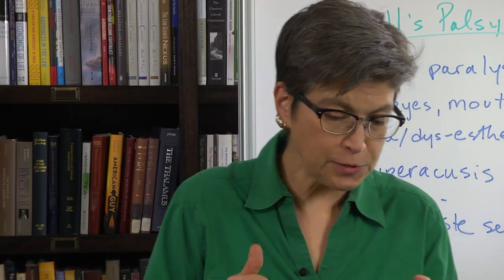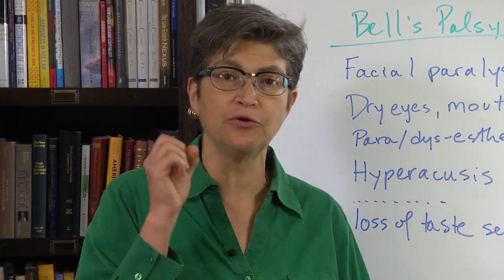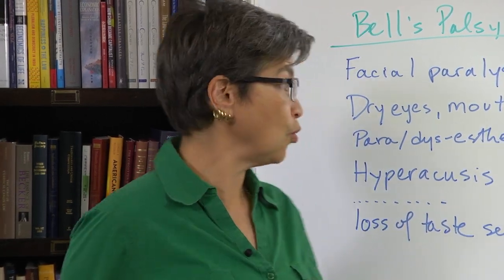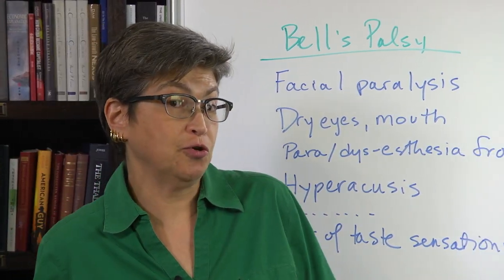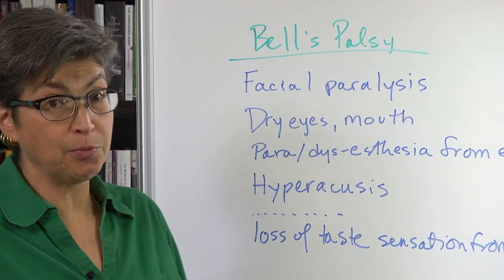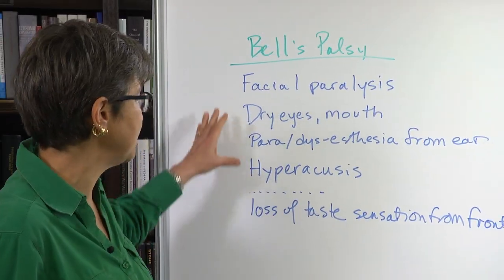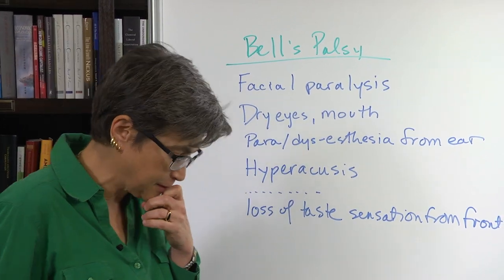What is Bell's palsy? Bell's palsy is a problem with the entire facial nerve. The facial nerve has four components, but they're going to produce five effects.